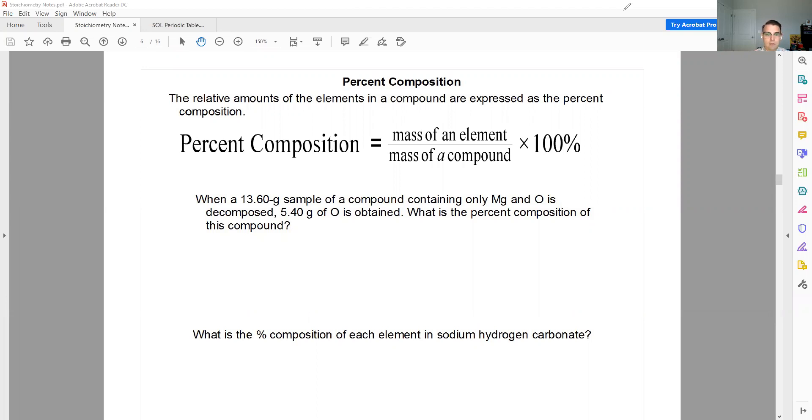The relative amounts of the elements in a compound are expressed as a percent composition. So it's just the mass of the element you're looking for divided by the mass of the compound multiplied by 100. Pretty simple.